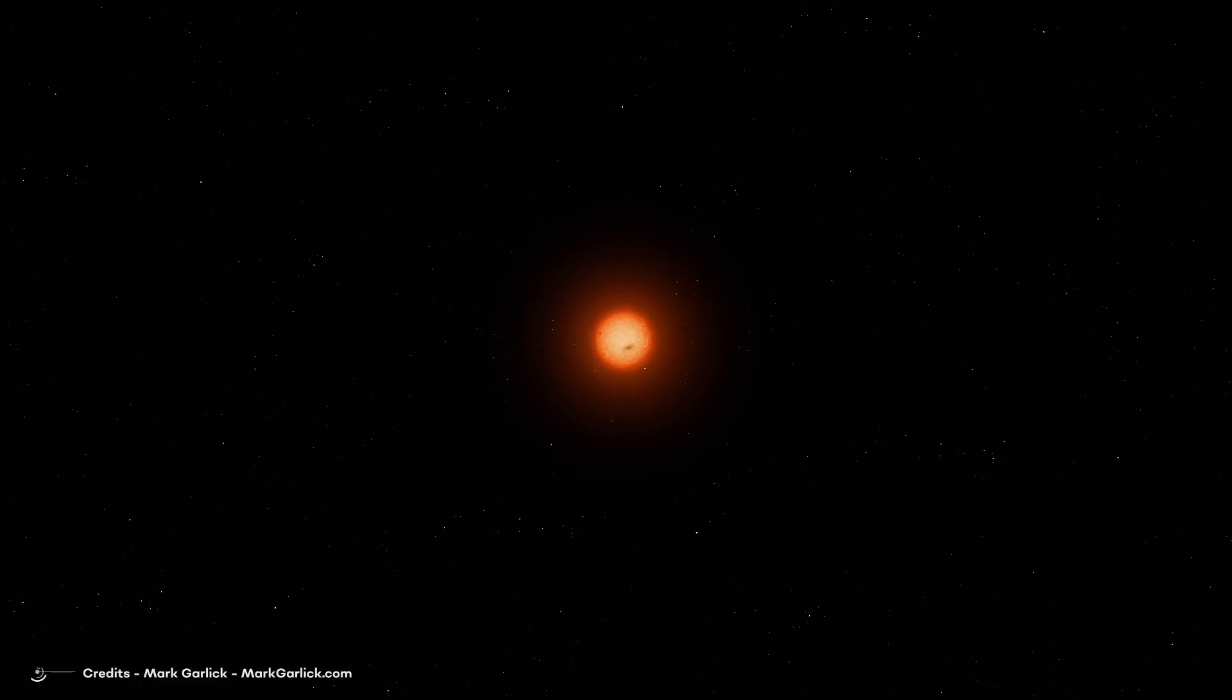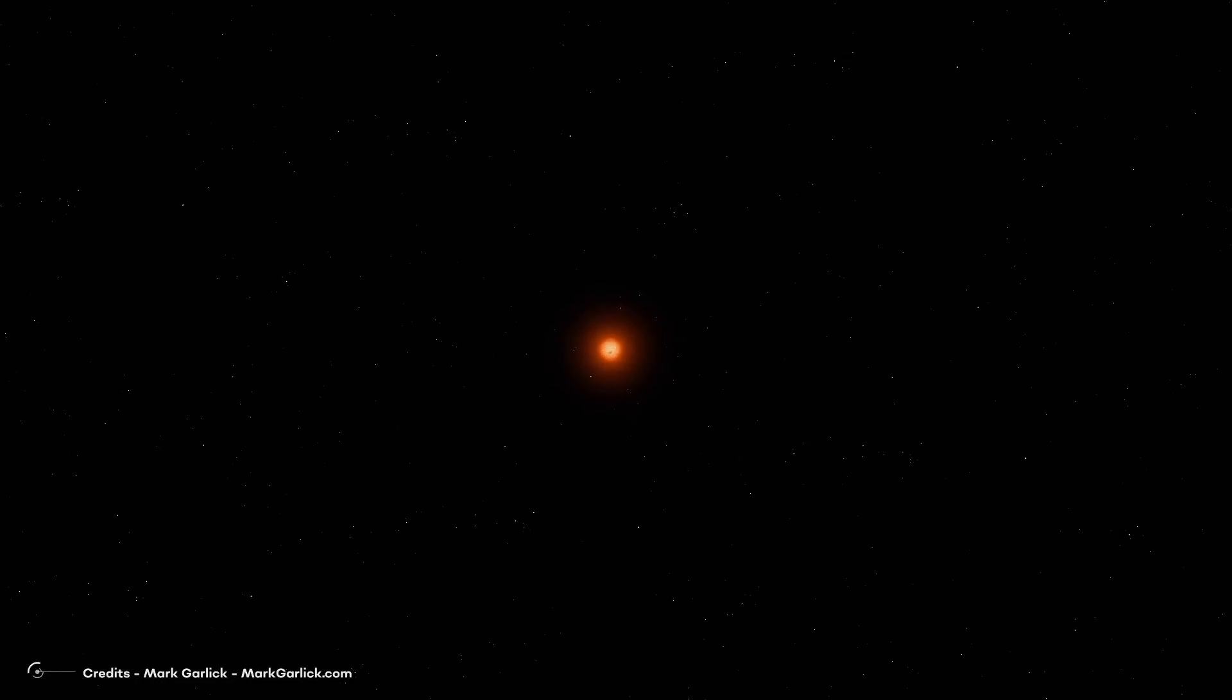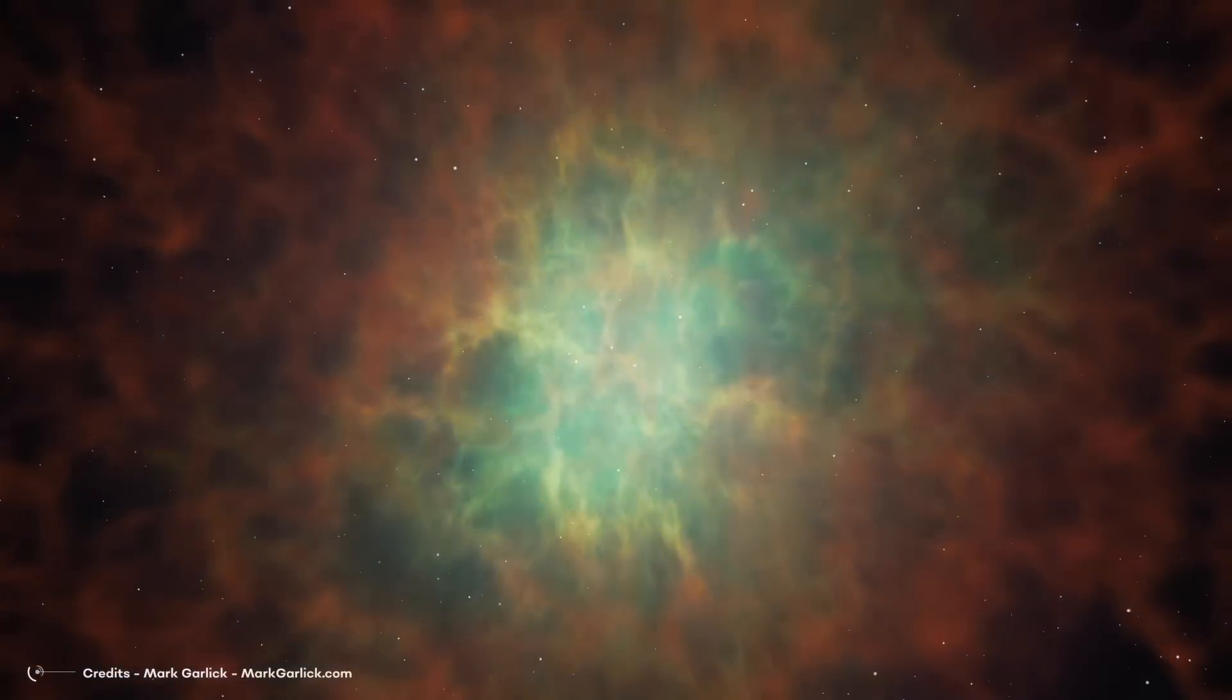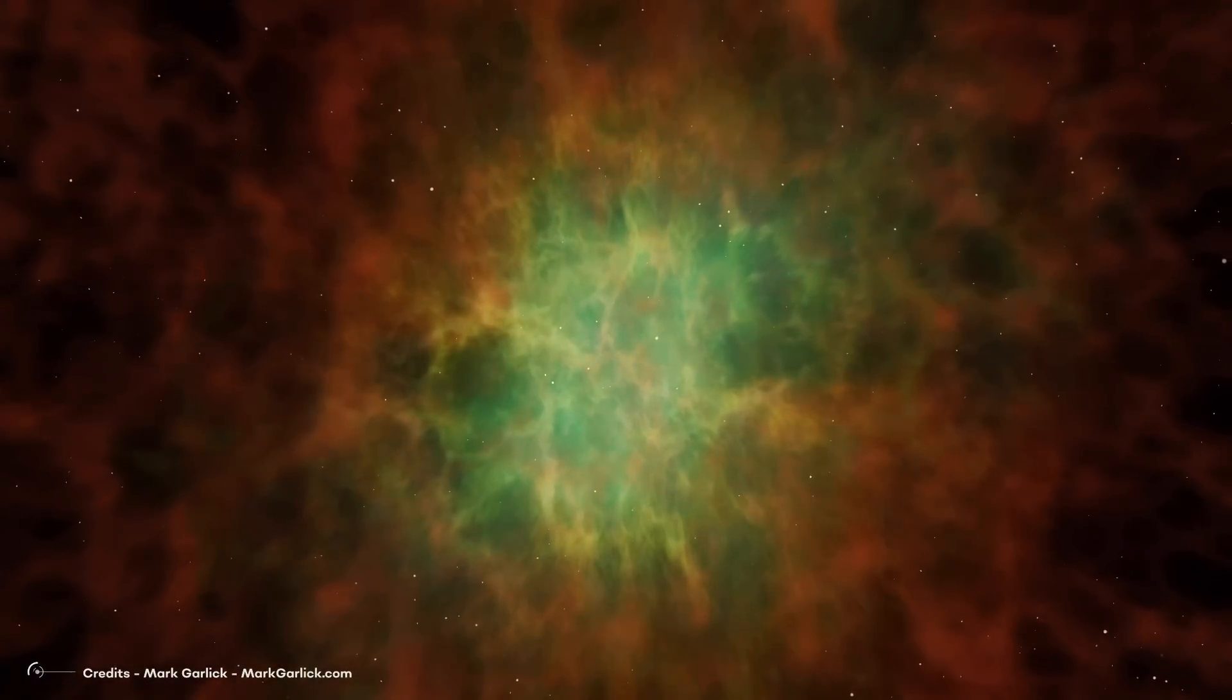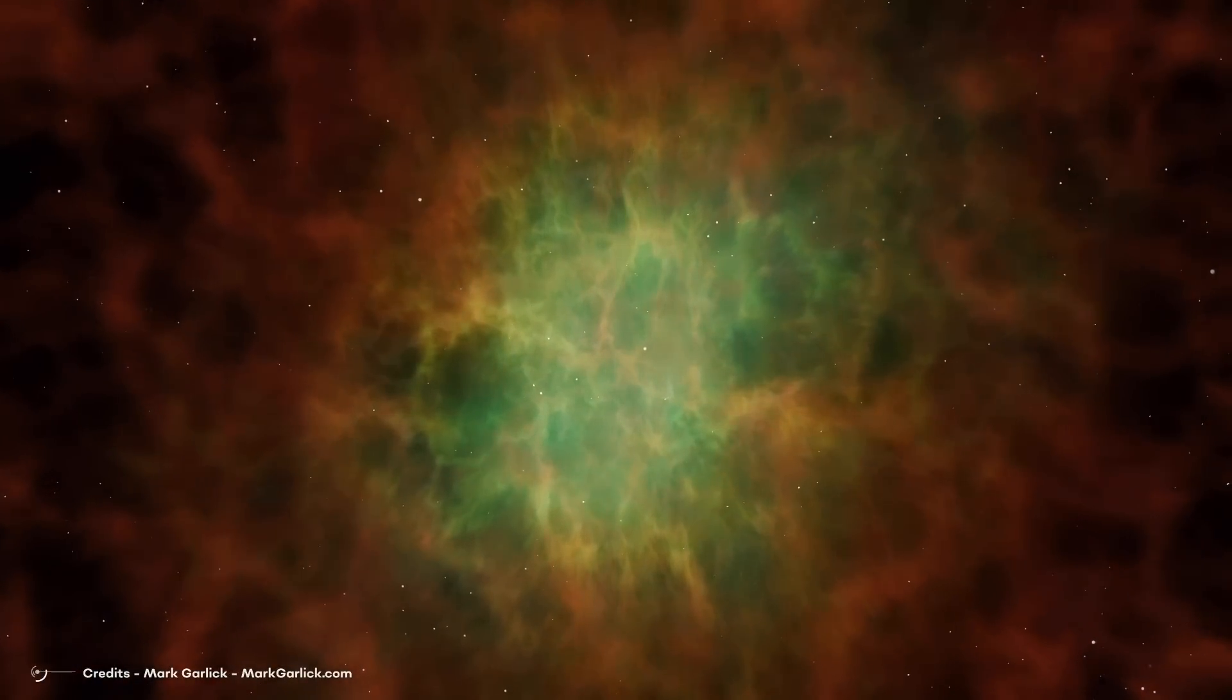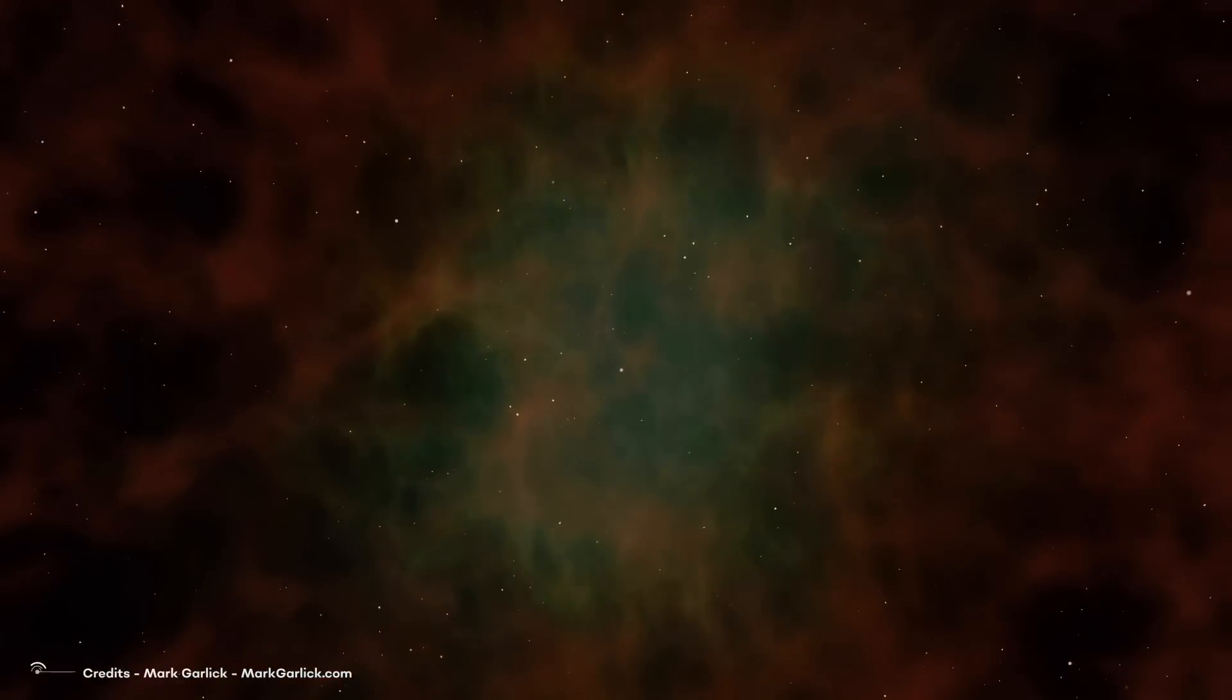Eventually, it'll run out of fuel, go supernova, and throw off its outer layers, leaving behind a tiny core called a neutron star. Scientists knew that eventually it would explode in a supernova, but it might take another 100,000 years. In 2019, the stars started to dim, and by February 2020, it had lost two-thirds of its normal brightness as seen from the Earth. What happened then?